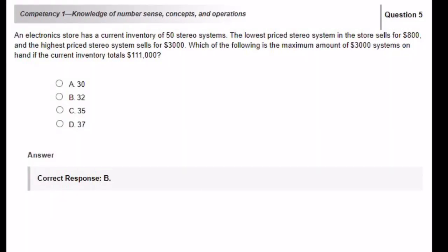An electronics store has a current inventory of 50 stereo systems. The lowest price stereo system in the store sells for $800, and the highest price stereo system sells for $3,000. Which of the following is the maximum amount of $3,000 systems on hand if the current inventory totals $111,000? So according to the question, I need to find the maximum amount of $3,000 systems I can have in my current inventory. So that's what my answer choices would represent.